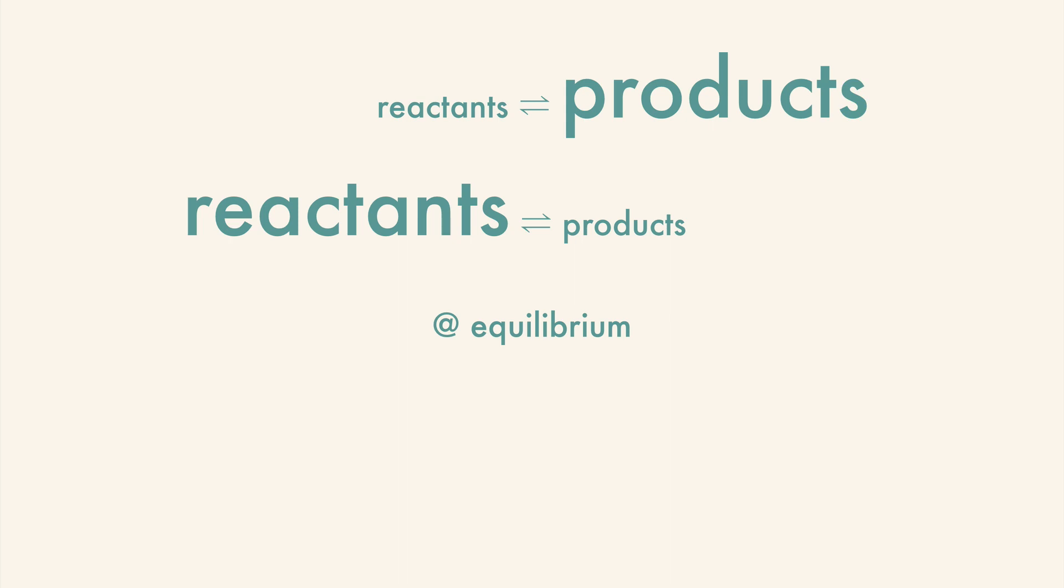Some reactions will create more products and other reactions will create more reactants, but at equilibrium the forward rate and the reverse rate are equal so that there is still no net change in the amount of reactants and products.